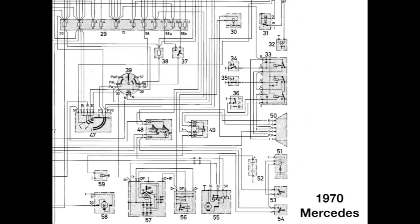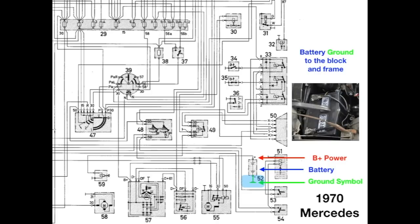I've said often, many times, you can understand how things work by understanding the electrical diagram. So, let's take a look. Of course, we have the battery. Let's first find our grounds. The battery ground, of course, the cable connects the block and the frame to the ground.